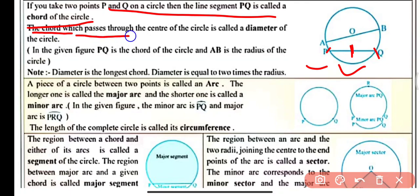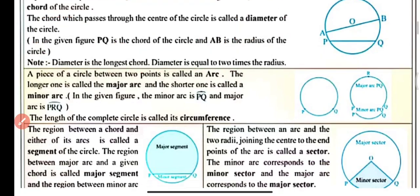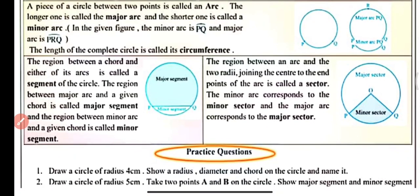The chord which passes through the center of the circle is known as the diameter of the circle. Here chord AB passes through center O, therefore chord AB is known as the diameter of the circle. OA and OB are radii, and AB is the longest chord — the diameter. In the given figure, PQ is a chord and AB is the diameter. Diameter equals twice the radius.